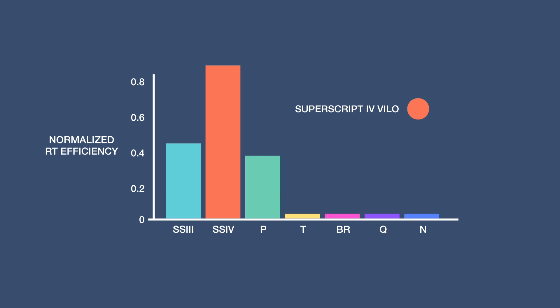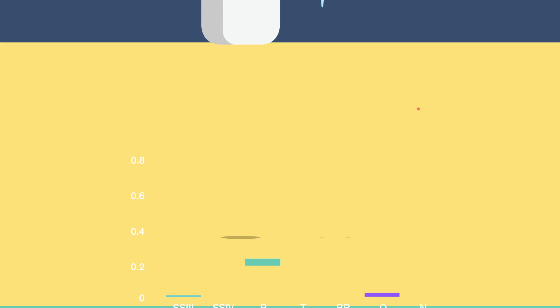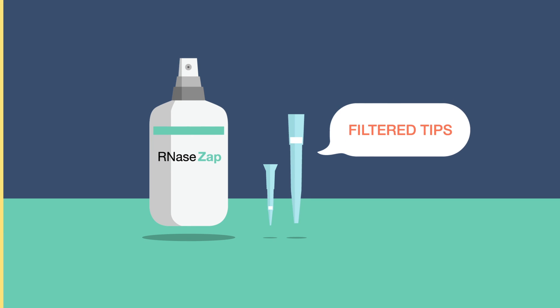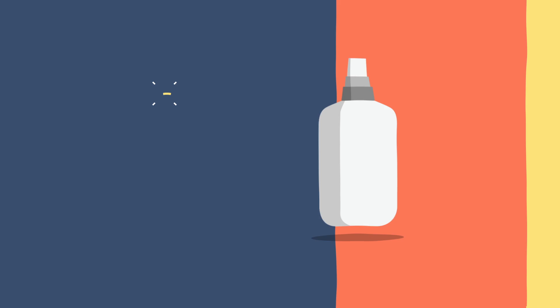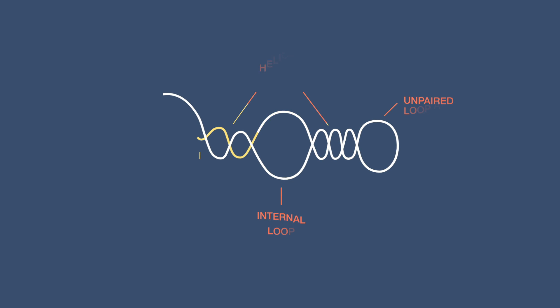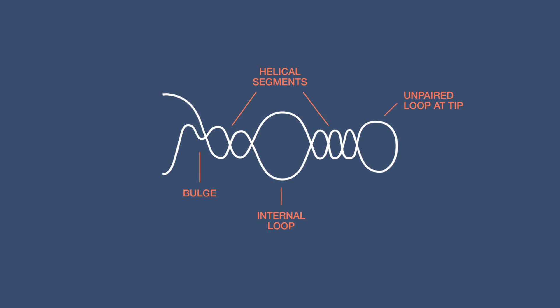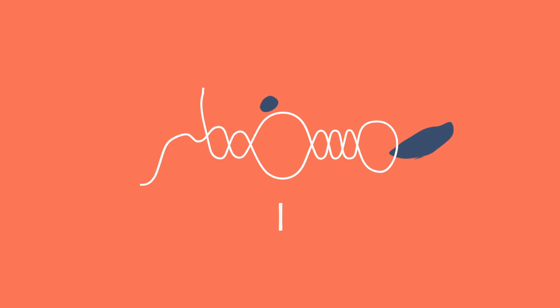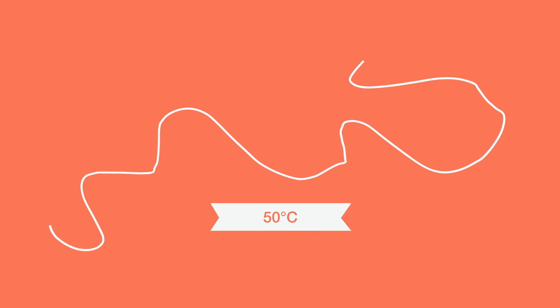Also include RNA inhibitors to prevent contamination. The third reason is complex RNA secondary structure, which can impair the reverse transcriptase's binding to RNA and thus inhibit cDNA synthesis. To overcome this, perform cDNA synthesis at a higher temperature to remove secondary structures.